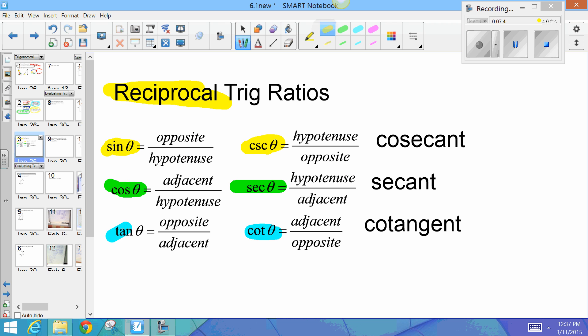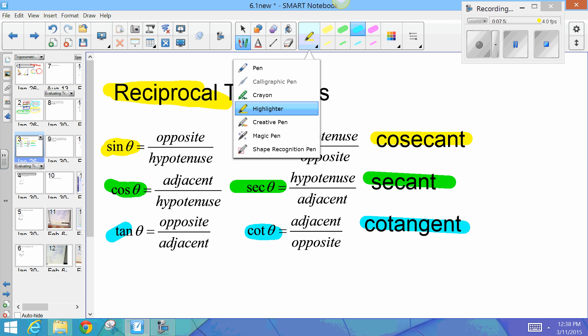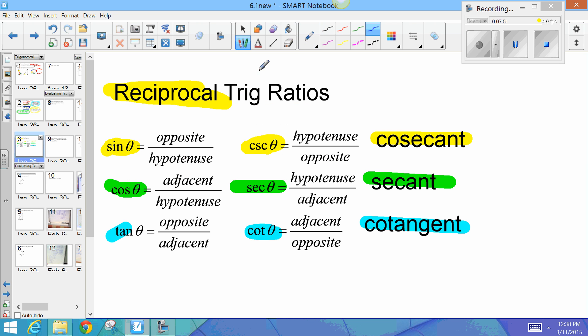And, over here on the right, I have the full name of whatever it is so that you know how to pronounce them. So, this in the trig ratio is how you write them. Okay. This is how we write them, the abbreviations we use, and then this is how we say them. Okay. That's it.